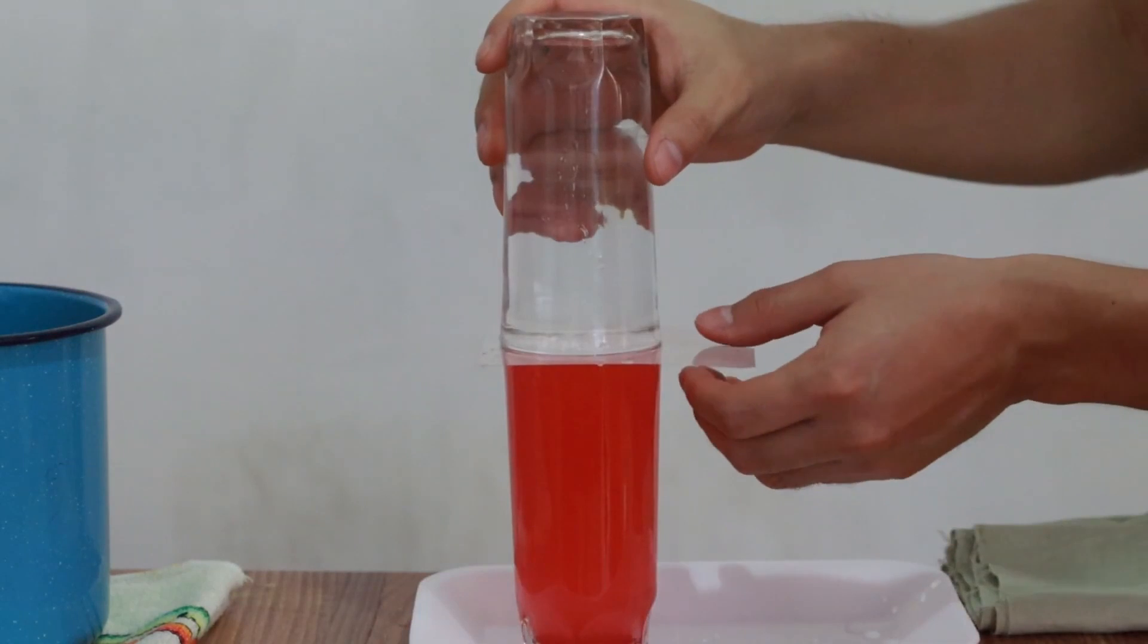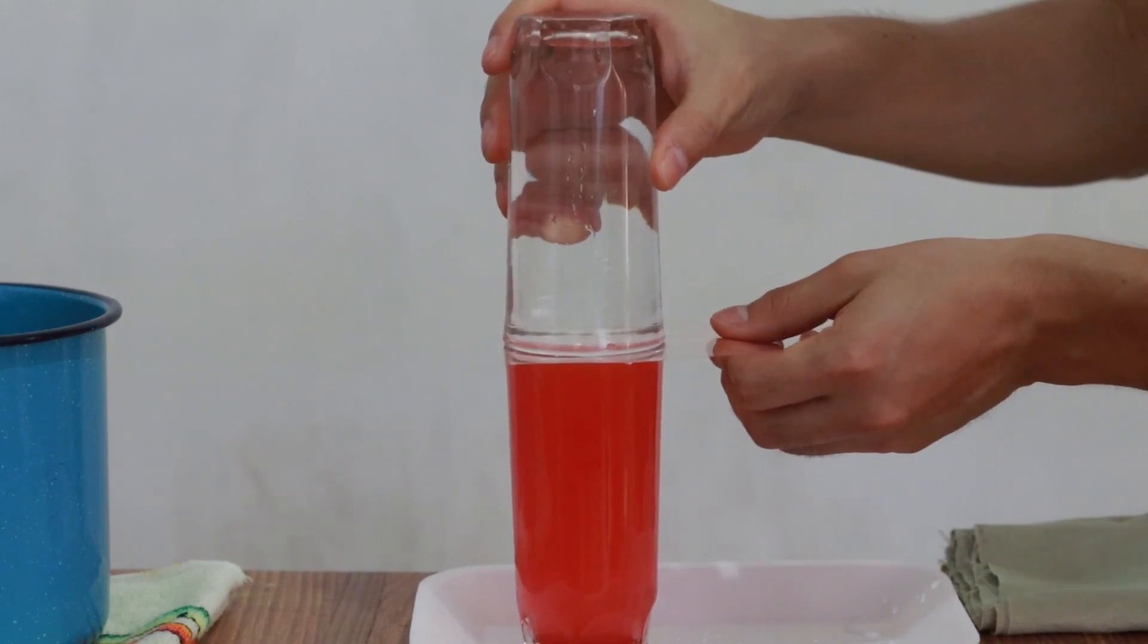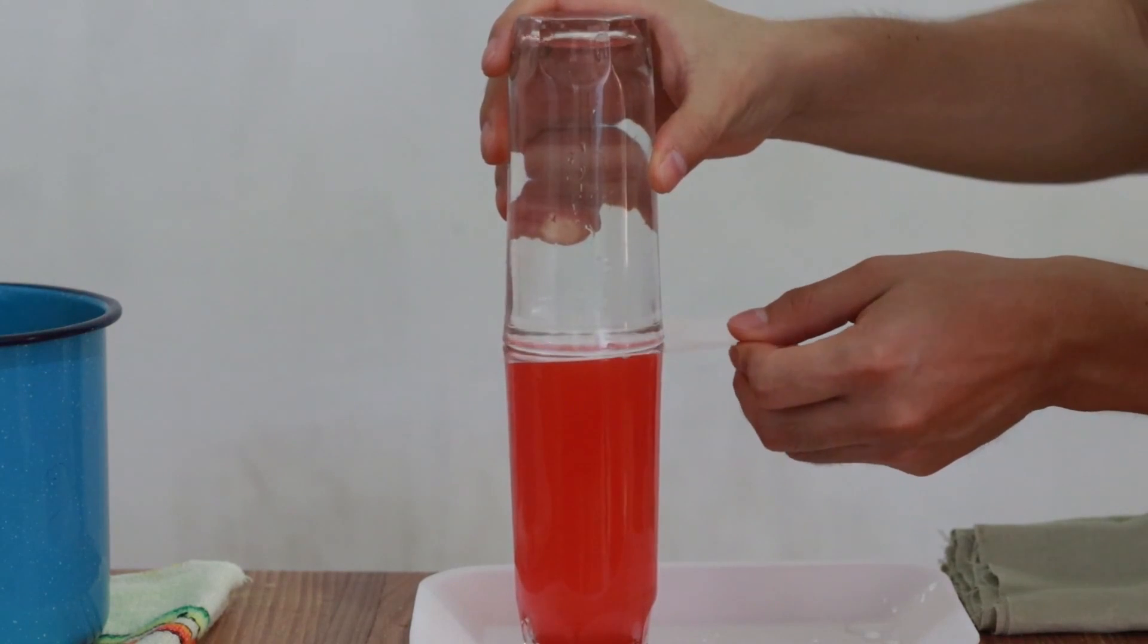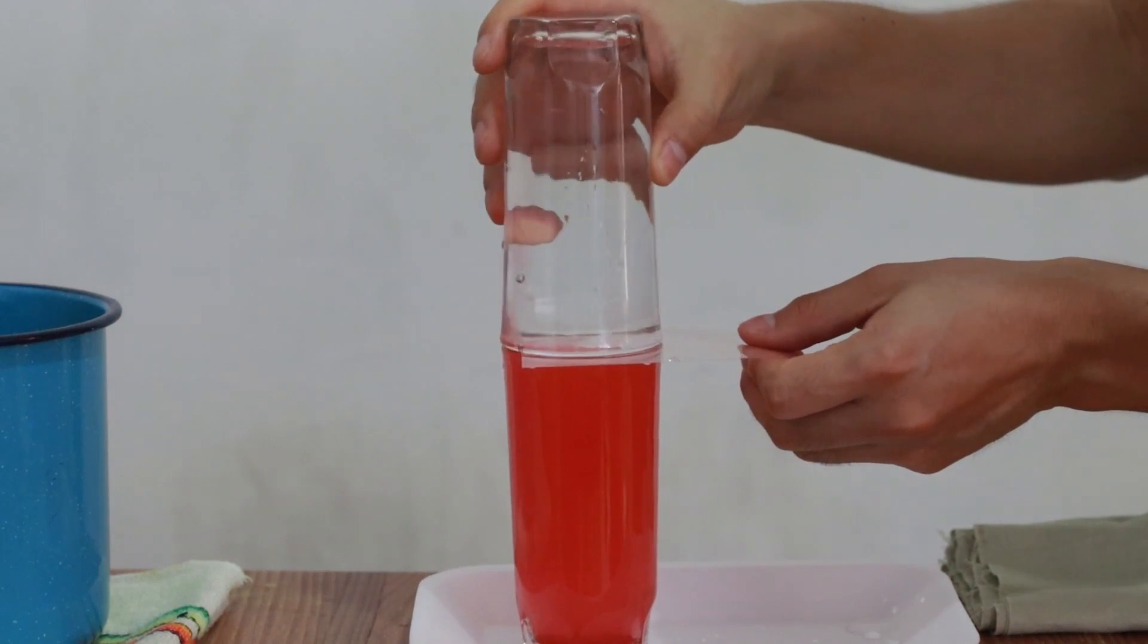Once aligned we remove the plastic with gentle movement until a space is generated in which water can circulate from one glass to the other.